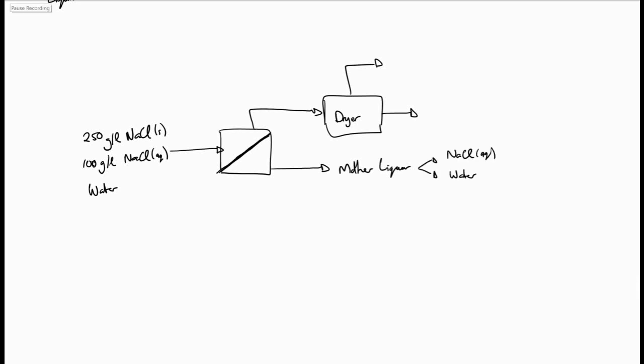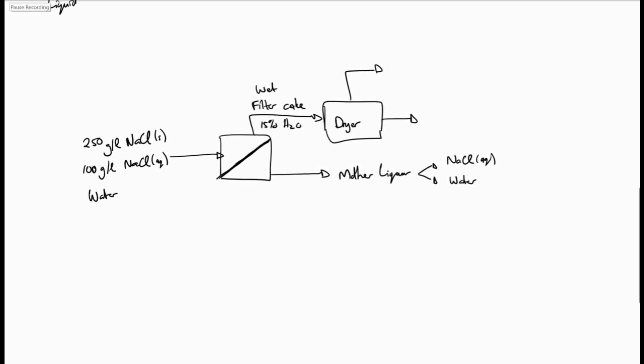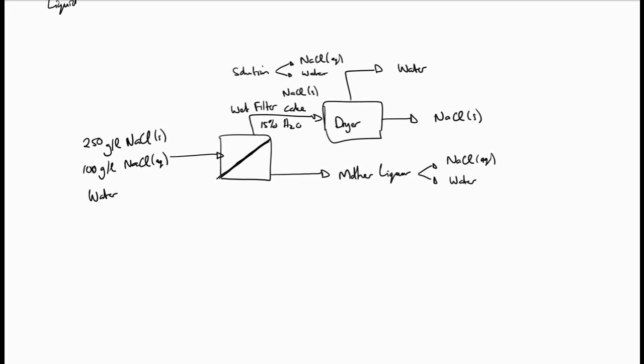The wet filter cake from the filter contains 15% water, and is dried in a dryer. Thus all the sodium chloride fed to the dryer leaves as solid sodium chloride — this implies that even the aqueous sodium chloride leaves as sodium chloride solids. The wet filter cake is made up out of the sodium chloride solids coming into the system, and solution stuck to the solid filter cake, containing sodium chloride in aqueous form and water. All information is now on the diagram.